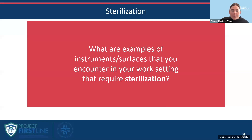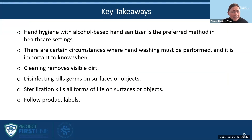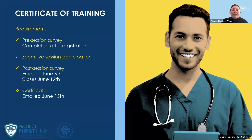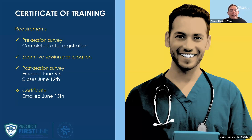Our key takeaways for today: hand hygiene with alcohol-based hand sanitizer is the preferred method in healthcare settings, but there are certain circumstances where hand washing must be performed. Cleaning removes visible dirt. Disinfecting kills germs on surfaces or objects. Sterilization kills all forms of life on surfaces or objects. And lastly, follow the product labels. For a certificate of training, you must complete the pre-session survey, attend the webinar, and complete the post-session survey. The post-session survey will be emailed tomorrow, June 6th — please complete it by June 12th at midnight.